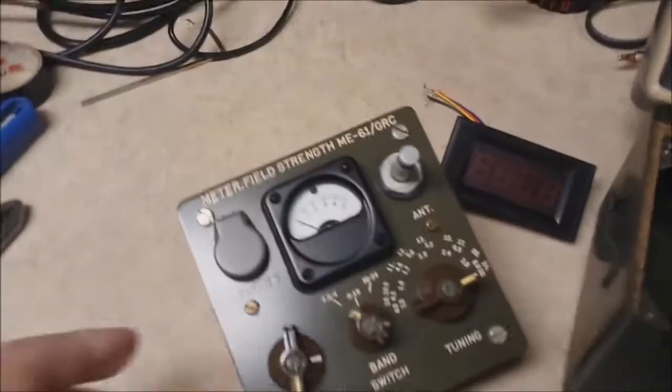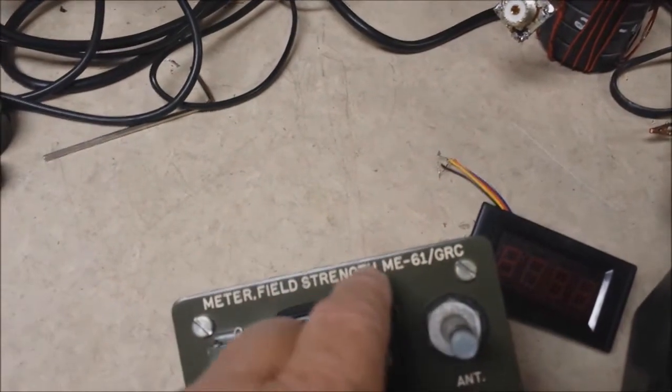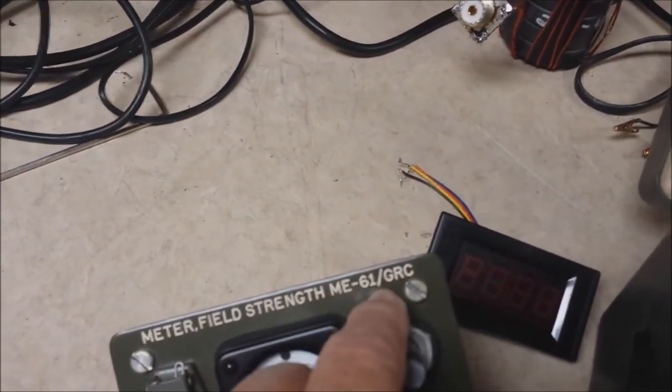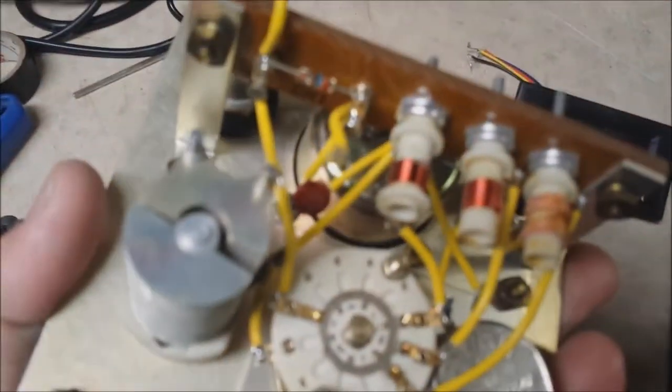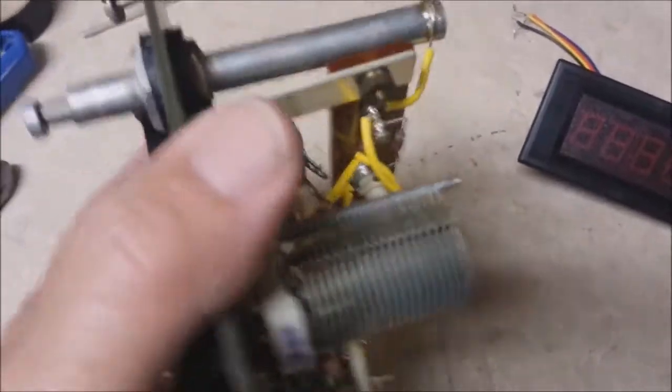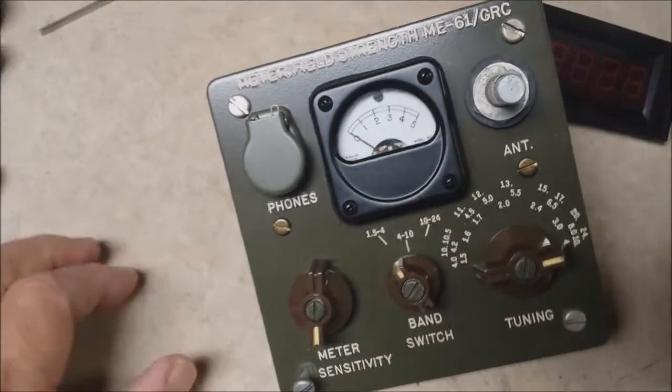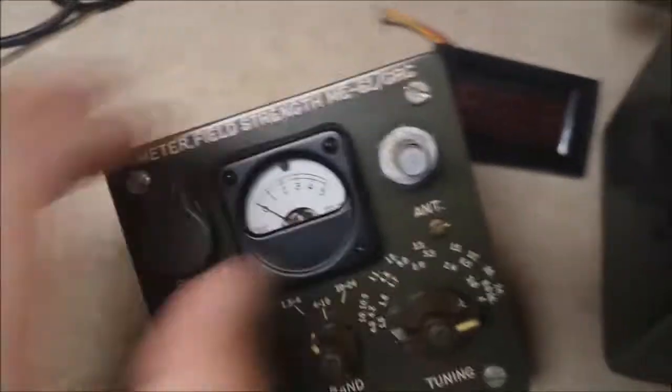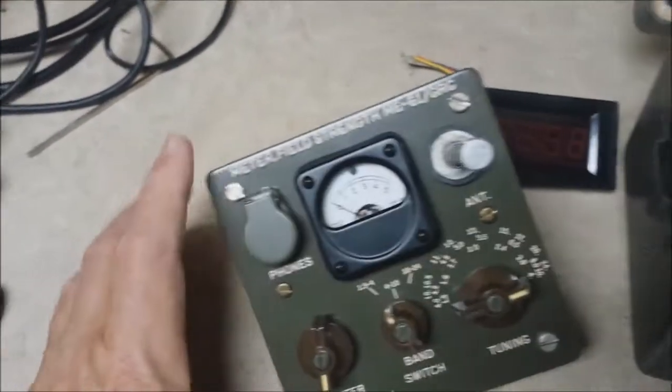I picked this field strength meter up at a ham fest. This is the ME-161 GRC military job. It's got a tunable input and it's sensitive, but it's not sensitive enough to read anything more than just a few feet away unless there's a tremendous amount of power involved. This is the antenna, it pulls up like so.